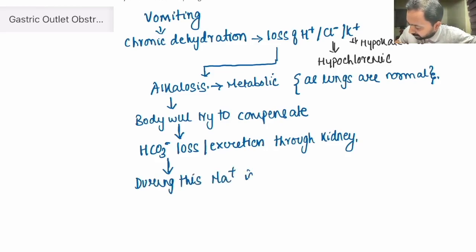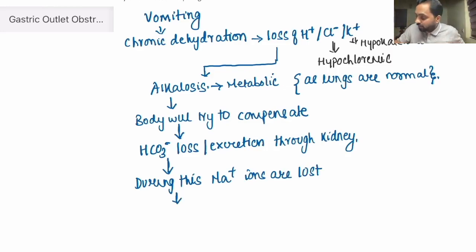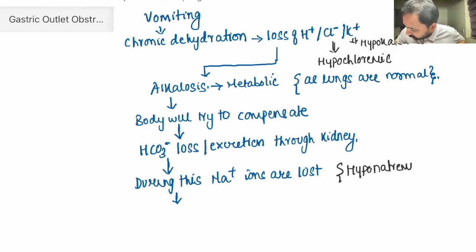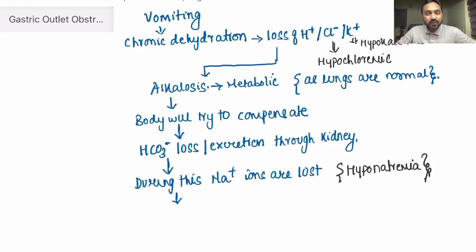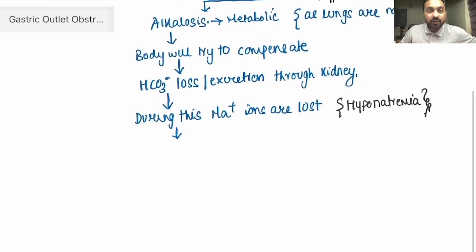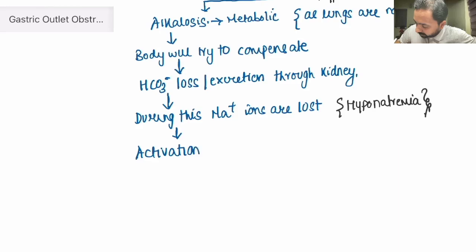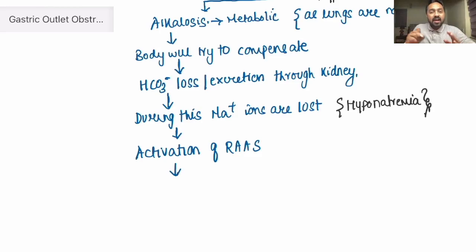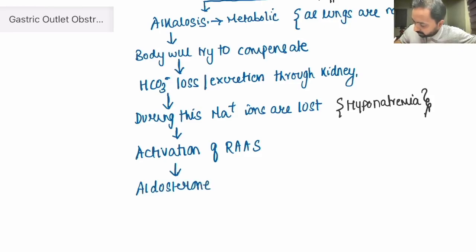So Na+ ions are lost, and this is basically leading to a state of hyponatremia. We know that this low sodium or state of hyponatremia is going to activate the RAS system — the renin-angiotensin-aldosterone system. Because of this activation of the RAS system, it is going to liberate aldosterone.